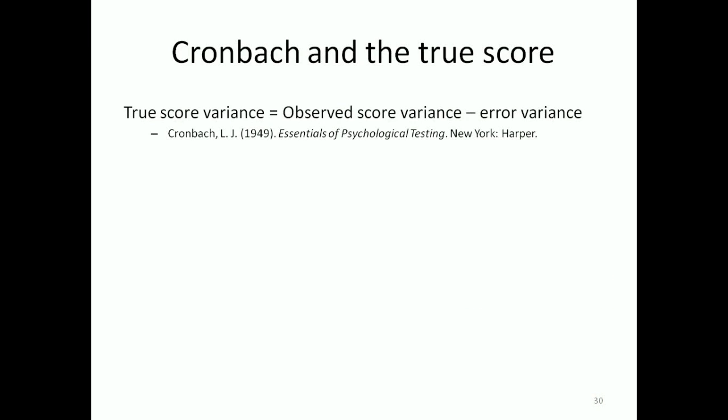What in fact Cronbach goes on to argue is that the true score variance is equal to the observed score variance minus the error variance. What in fact he states is we obtain the variance of observed scores of a group of persons and subtract the error variance to estimate the true score variance.